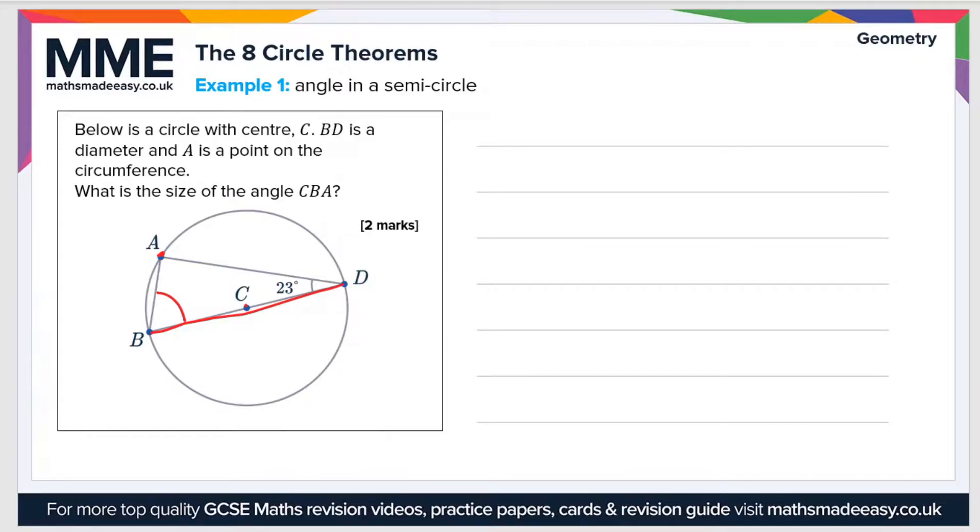We know that the angles in a triangle sum to 180 degrees, and using our circle theorems we know that this angle here is 90 degrees. And that is because BD is a diameter and the diameter subtends an angle of 90 degrees.